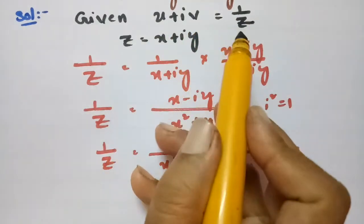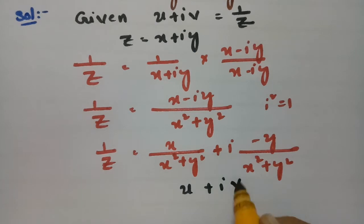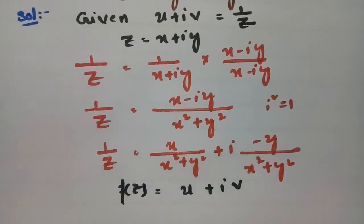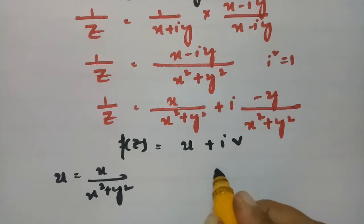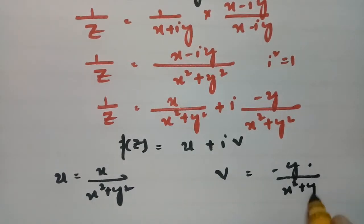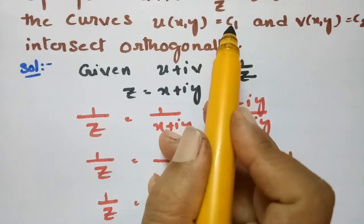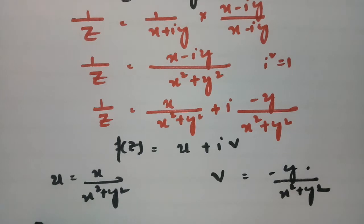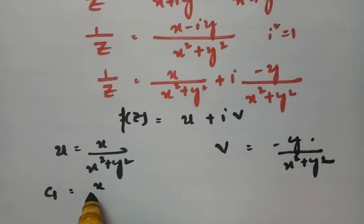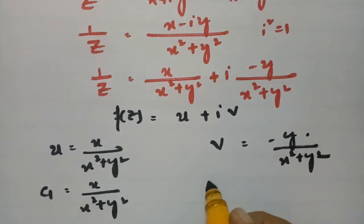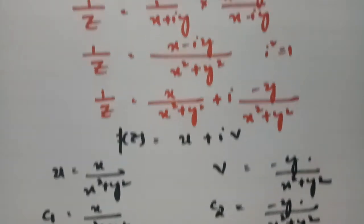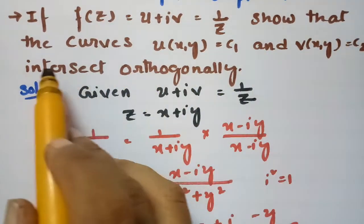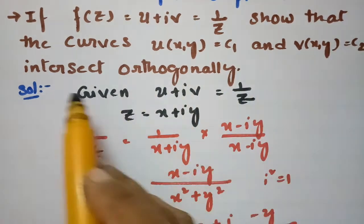Since u + iv = 1/z, the real part gives u = x/(x² + y²) and the imaginary part gives v = -y/(x² + y²). From the question, u(x,y) = c1 means c1 = x/(x² + y²), and v(x,y) = c2 means c2 = -y/(x² + y²).